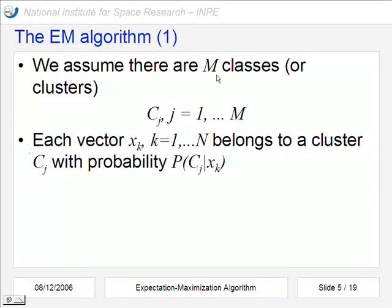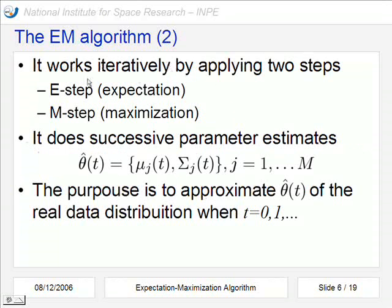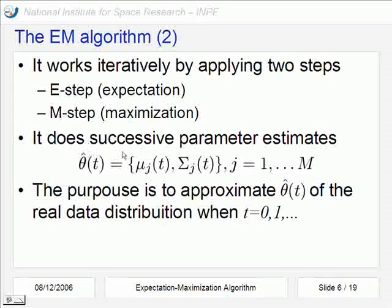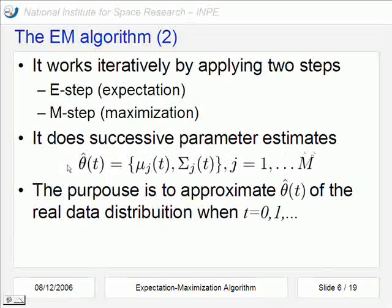This algorithm works iteratively applying two steps that we call the E-step and the M-step, corresponding to Expectation and Maximization. These steps do successive parameter estimates of theta, which is a set of parameters that are mean and covariance matrix for each of the m classes.